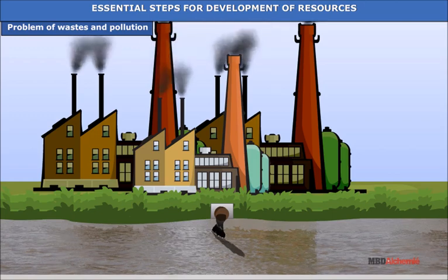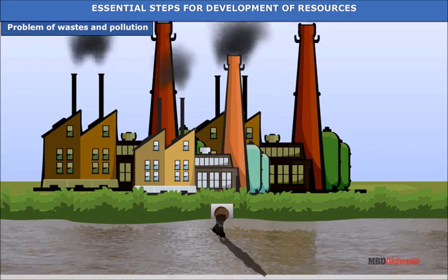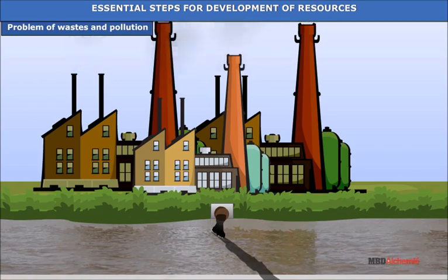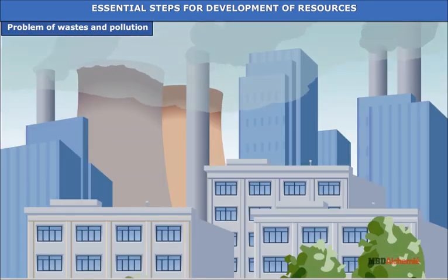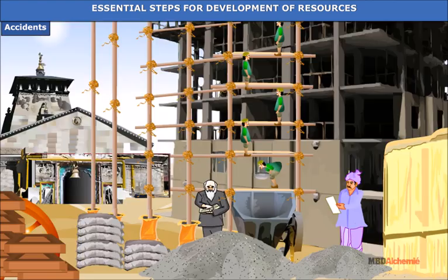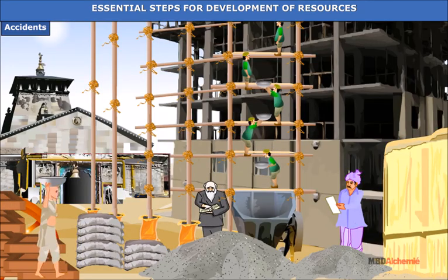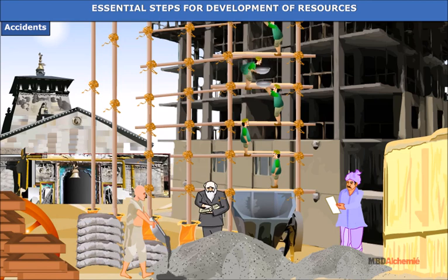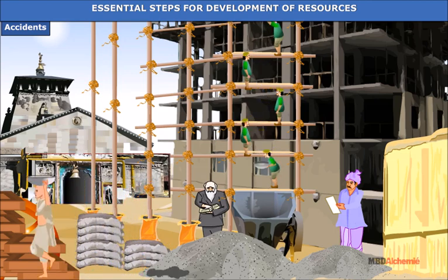The exploitation of resources leads to accumulation of huge wastes in the environment. Many resources are also misused because of inefficient technology or wasteful consumption patterns. Accidents happen while mining, transporting and using resources, causing loss of life and property as well as damage to the environment. If proper planning is lacking, frequent accidents are inevitable.